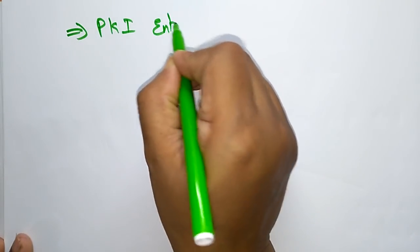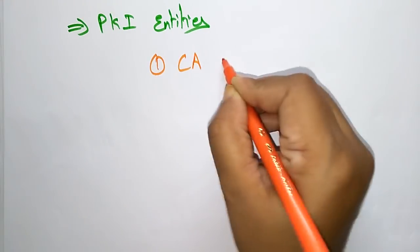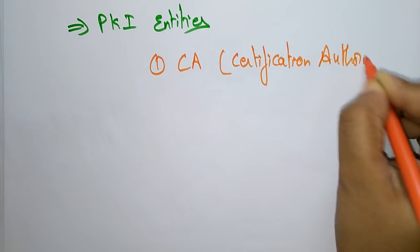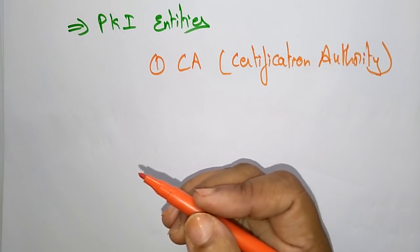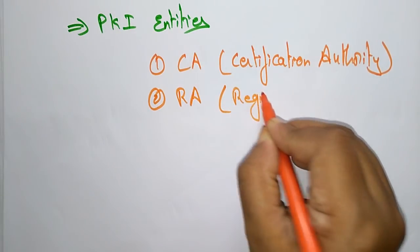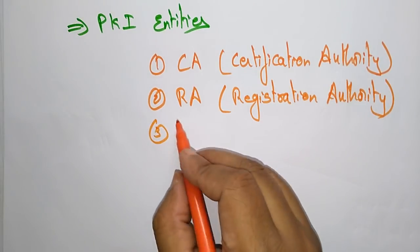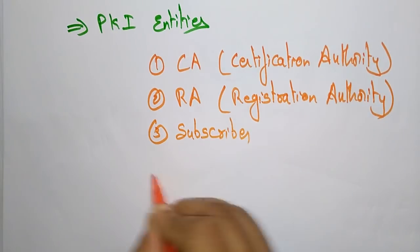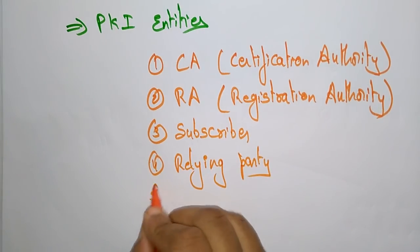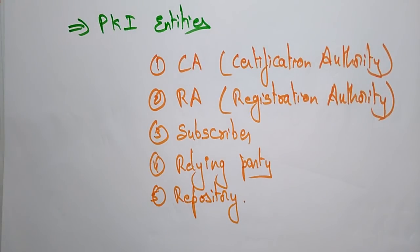The different entities present in Public Key Infrastructure are: CA — Certification Authority; RA — Registration Authority; Subscriber; Relying Party; and Repository. These are all the different entities used in public key infrastructure.